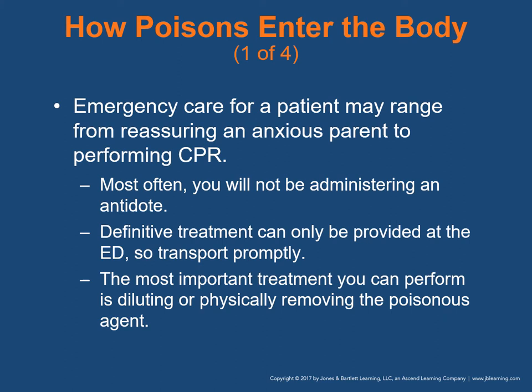Emergency care for a patient may range from reassuring an anxious parent to actually performing CPR. Make sure you have everything you need to manage the case — suction, something for them to vomit into, and your airway kit. If you have to, you can provide bag-valve mask ventilation and CPR. Definitive treatment can only be provided in the emergency department, but you may be able to administer an antidote. EMTs in Washington State can give Narcan.